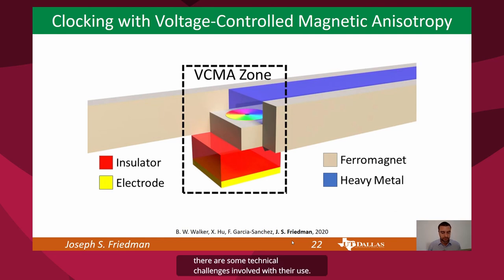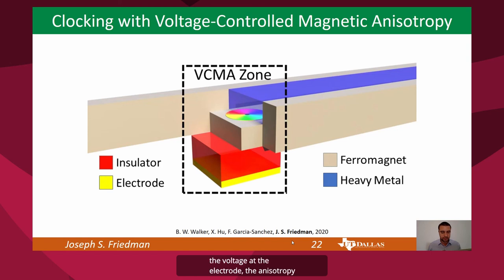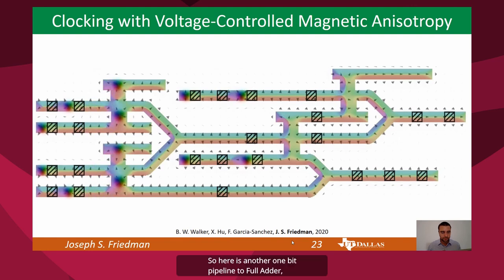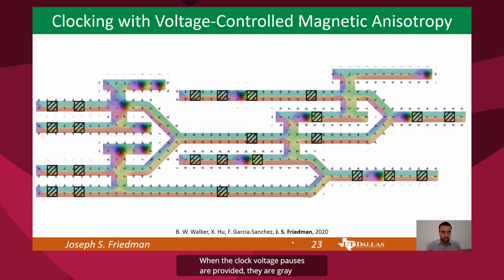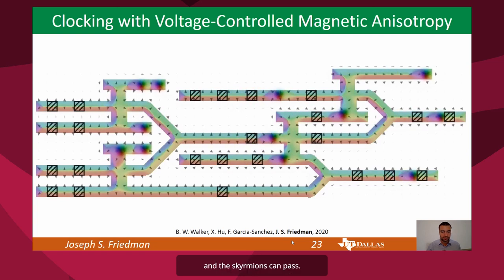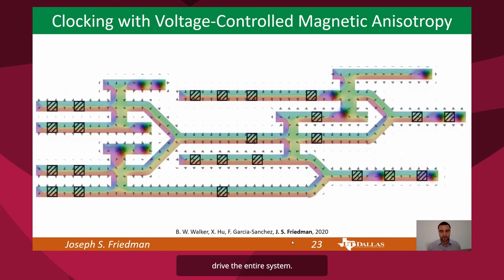While notches are great, there are some technical challenges involved with their use. We have therefore also proposed using voltage-controlled magnetic anisotropy (VCMA) for clocking. By changing the voltage at the electrode, the anisotropy of the ferromagnet changes, modulating the ability of the skyrmion to pass the VCMA zone. Here is another 1-bit pipelined full adder, this time with VCMA clocking. The boxes with diagonal lines are the VCMA regions — when they are black, skyrmions cannot pass; when the clocked voltage pulses are provided, they are gray and the skyrmions can pass. By clocking these VCMA zones, a single constant current can drive the entire system.